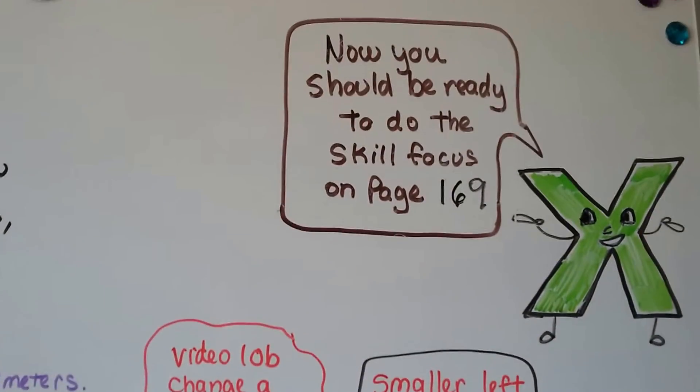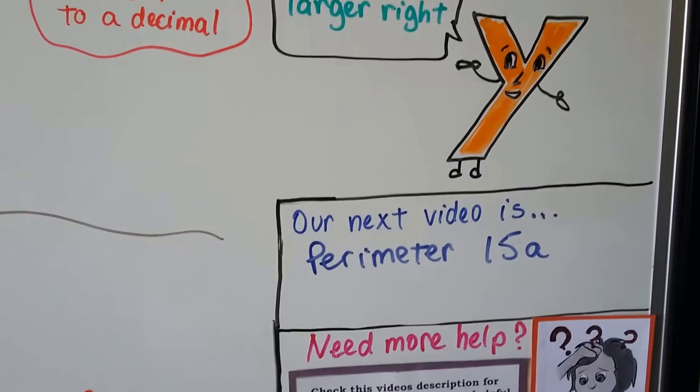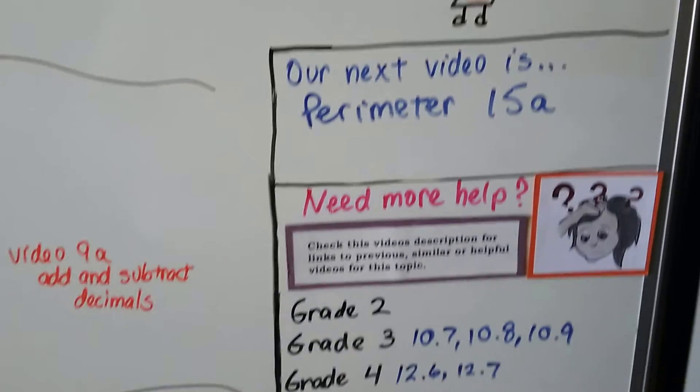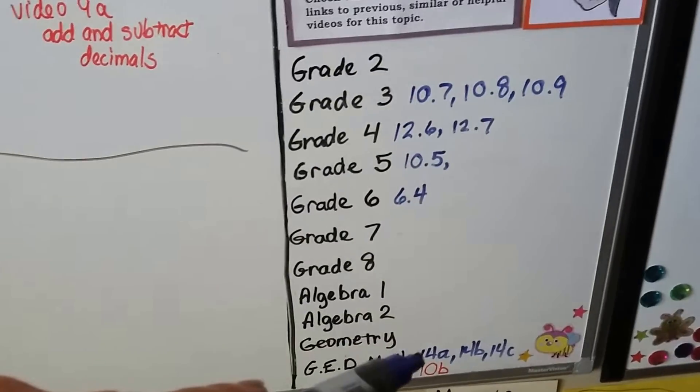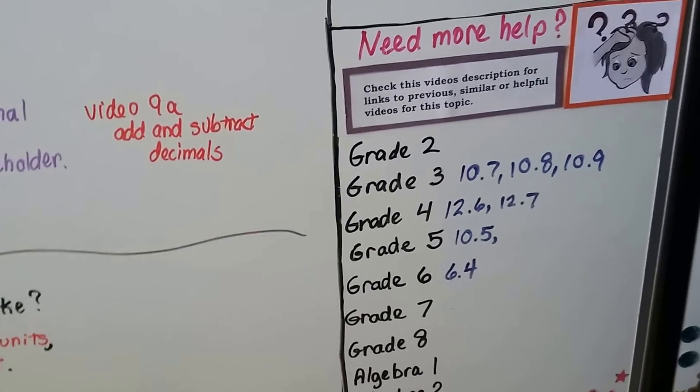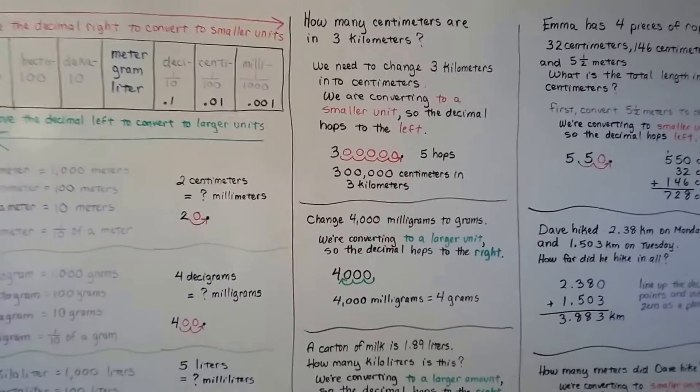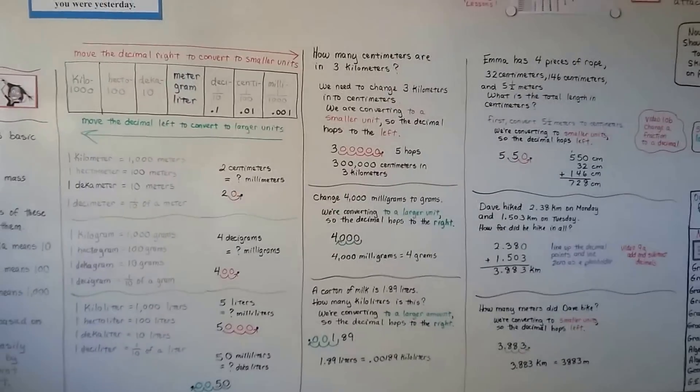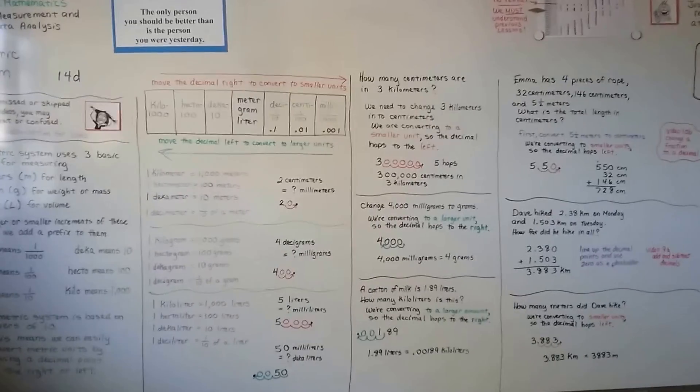And you should be ready to do the skill focus on page 169 now. And we're going to talk about perimeter next. Perimeter of polygons in lesson 15a. I'm going to have links to these helpful videos about the metric system and that video 10b and 9a that'll help you with changing a fraction to a decimal and adding and subtracting decimals. And I think 9b even talks about multiplying and dividing decimals. So you should know all of that by now.